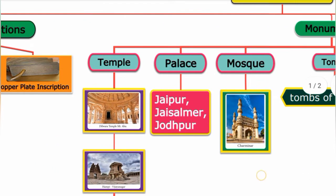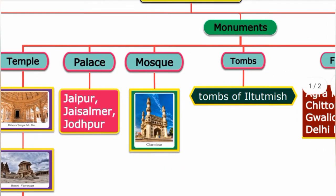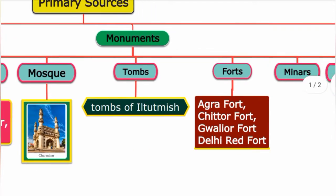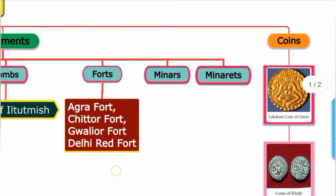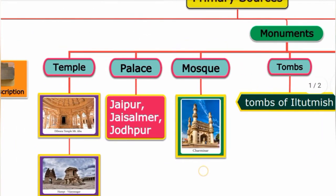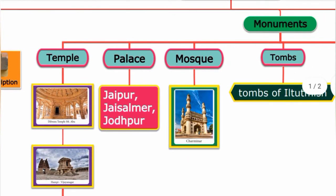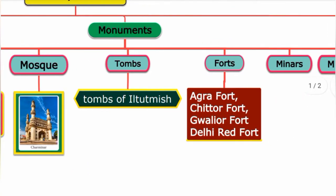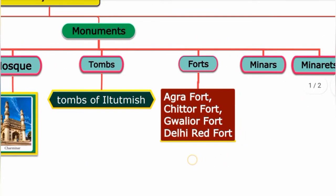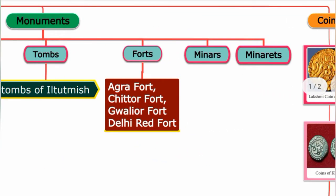Under monuments, we have temples, palaces, mosques, tombs, forts, minars, and minarets. Minars are towers, and minarets are the pointed spires or steeples found on structures.